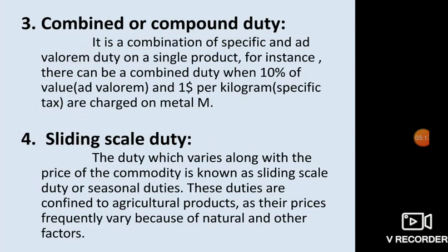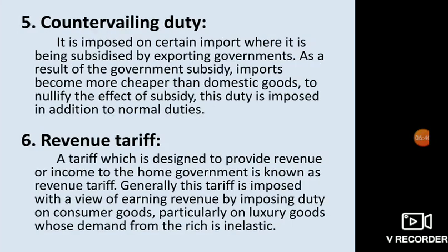Sliding scale duty: the duty that varies along with the price of the commodity is known as sliding scale duty, also called seasonal duty. These duties are confined to agricultural products, which are seasonal, as their prices frequently vary due to natural and other factors. The tax here is not fixed — it varies accordingly.